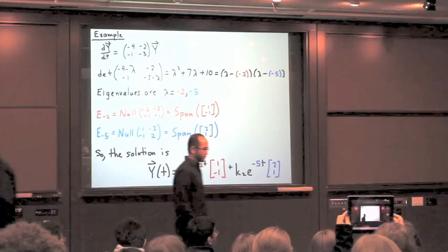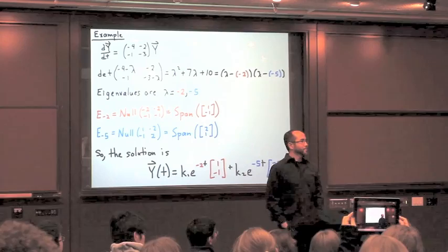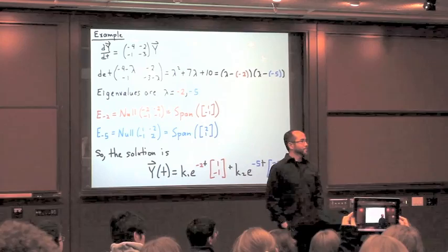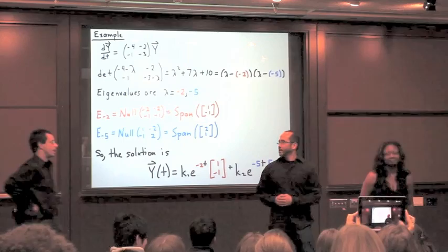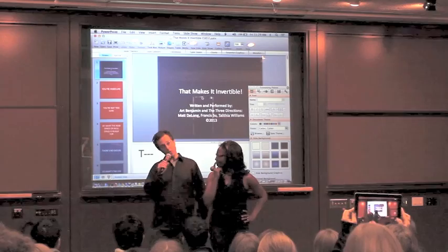Yeah. Something's been puzzling me all semester — I'm still not quite sure how I can tell what makes a matrix invertible. Well, we could try to point him in the right direction. Yeah, but we wouldn't want to point him in three different directions. So maybe we could use a song to point Sherman in one direction.